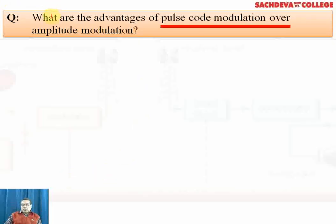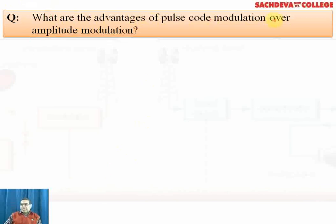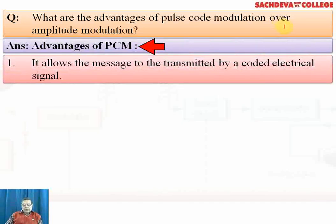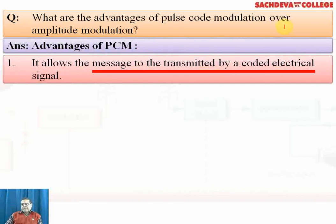What are the advantages of pulse code modulation over amplitude modulation? The phenomena we are discussing depend upon the logic gate system first developed by Boolean mathematics. Proceeding with PCM over AM, the first advantage is that it allows the message to be transmitted by a coded electrical signal, so a proper code is given to form a message.